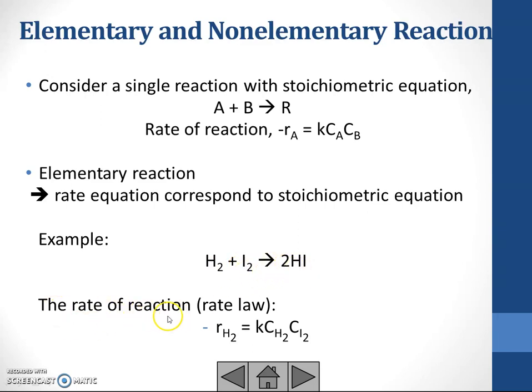The rate of reaction or rate law become negative R hydrogen. We are referring to this as your A. Negative R hydrogen equals to KCH2 power of 1, it does only have 1 stoichiometry, C iodine, only 1, so power of 1. This is your example of elementary reaction.